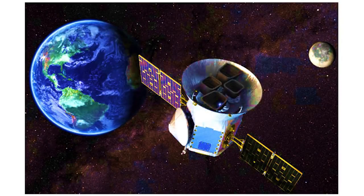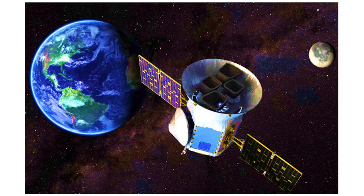We know that our solar system operates on gravitational principles now — the planets orbit the sun, the various moons orbit their planets, and spacecraft move in accord with gravitational laws. But gravity is a weak force. Was it really responsible for the actual formation of our solar system? Perhaps not. Let's run another model to see which one accounts for the data more accurately.